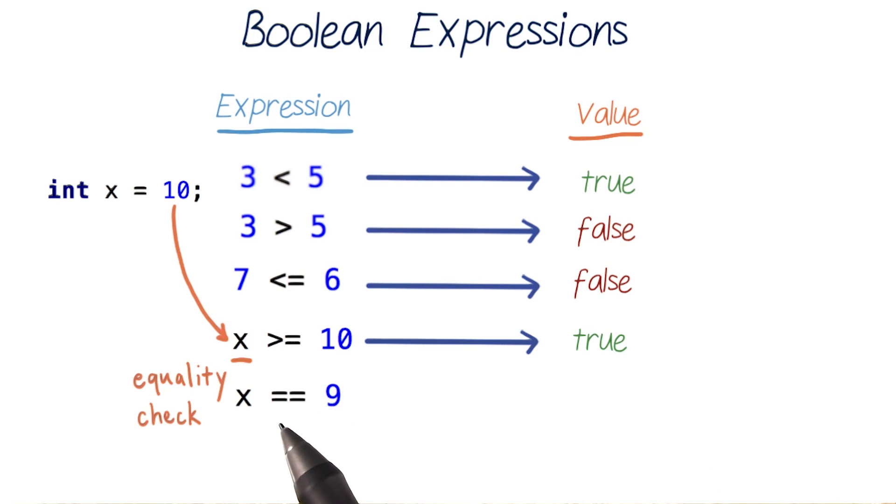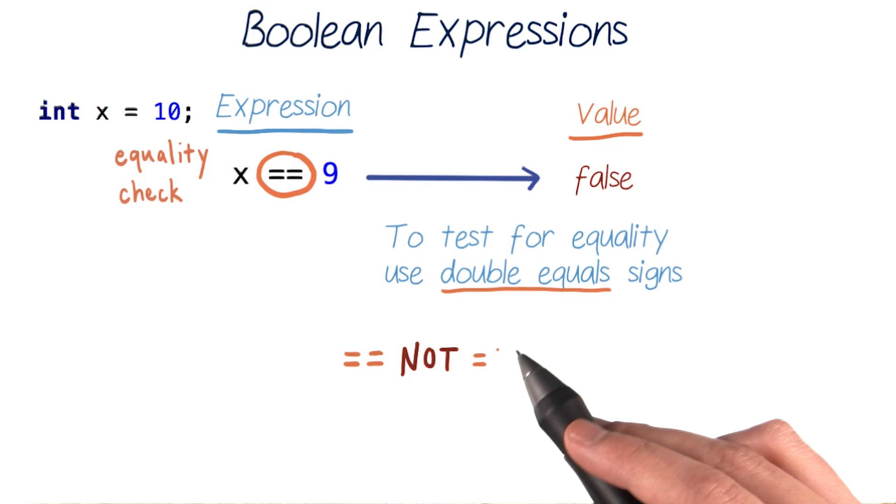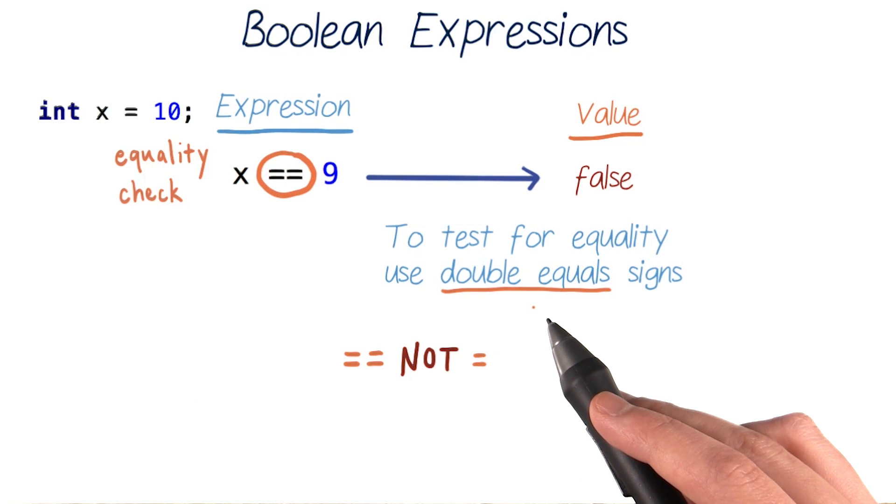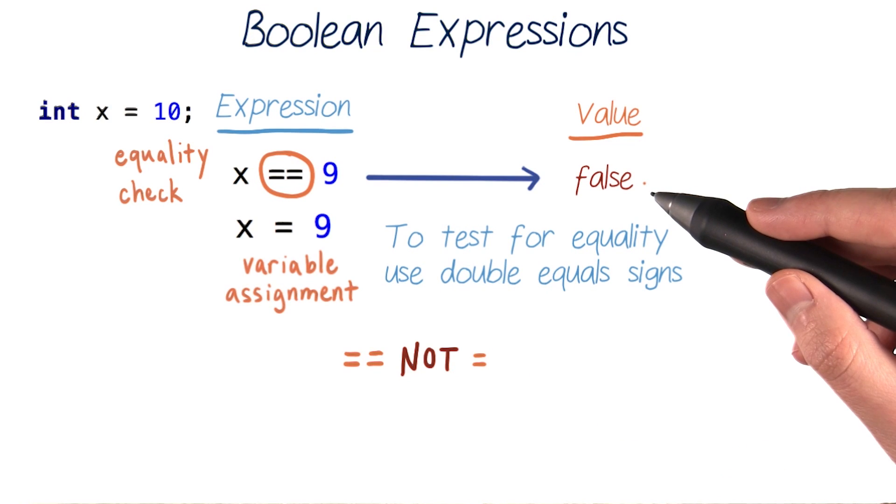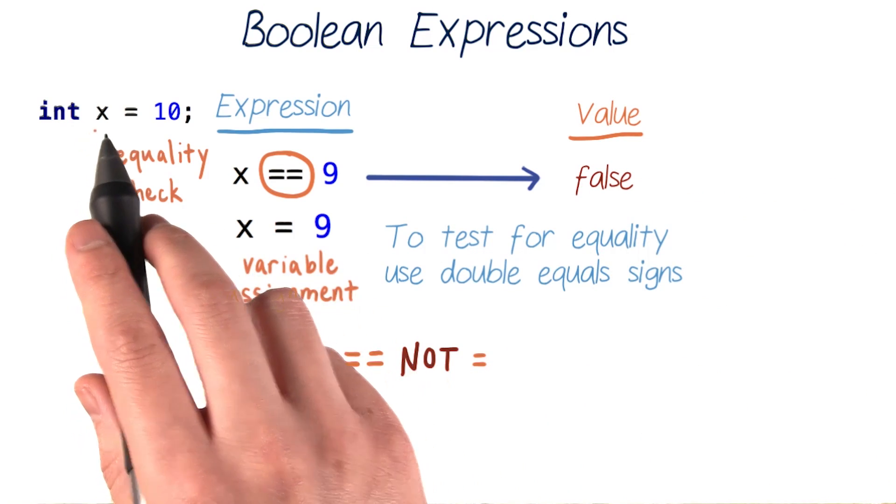And if we want to only test for equality, we use double equal signs. So we can test something like if x is equal to 9. And since 10 is not equal to 9, this expression will evaluate to false. Let's look at this equality check in detail. In Java, the double equal sign tests for equality and is not to be mistaken with the single equal sign, which in Java is a variable assignment. So when we write x equals equals 9, this expression is the equivalent of the boolean value false, and our variable x will still be equal to 10.